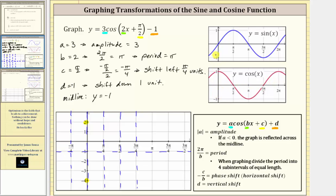Now we'll graph our cosine function based on our knowledge of the basic cosine function over one period divided into four equal subintervals: starting at the y-axis we have a maximum, then the midline, then a minimum, back to the midline, and back up to a maximum. So to graph our transformed function, we start at x equals negative pi over four with no reflection, and the amplitude is three, so we start at a maximum of positive two. Then we go back down to the midline, down to the minimum of negative four, back to the midline, and back up to the maximum. We now have the graph of one period of the given cosine function.